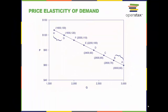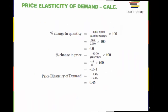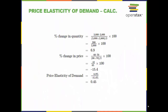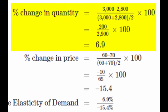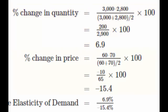The price elasticity of demand is calculated as the percentage change in quantity divided by the percentage change in price. Let's first look at the elasticity between point A and point B. First, we calculate the percentage change in quantity. Note that we average the denominator before we divide, then we convert it to a percentage by multiplying by 100. Our percentage change in quantity is 6.9%.